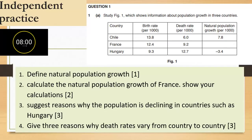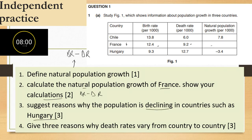Here is an IGCSE question related to this content. Question one: define natural population growth. Natural population growth is the difference between birth rate and death rate — that's one mark. Question two: calculate the natural population growth of France and show your calculations. Natural population growth equals birth rate minus death rate, so you substitute France's given birth rate and death rate to get your answer. Question three: suggest reasons why the population is declining in countries such as Hungary. Hungary is an MEDC, so the main reason for population decrease is a low birth rate.